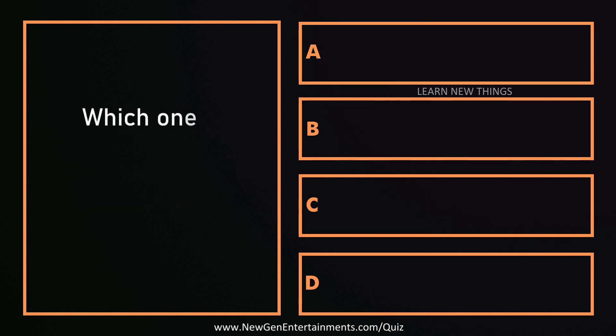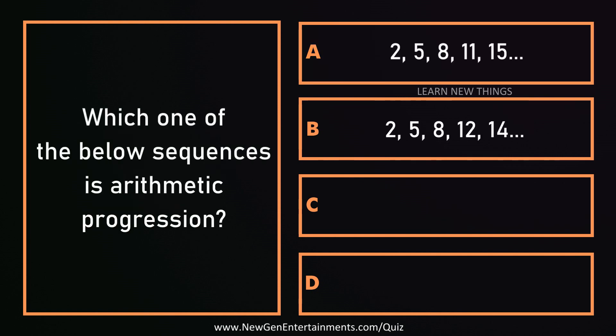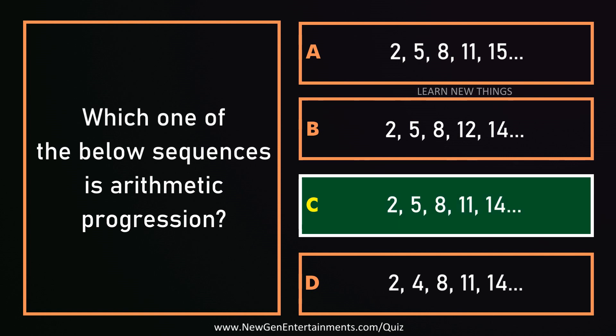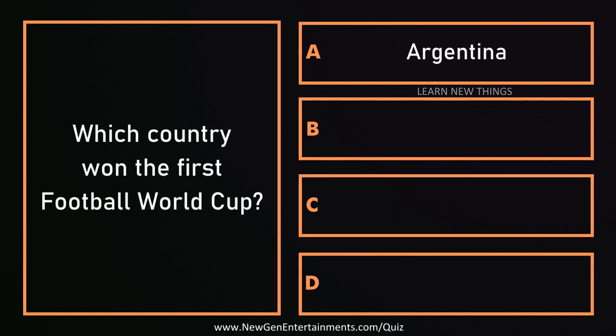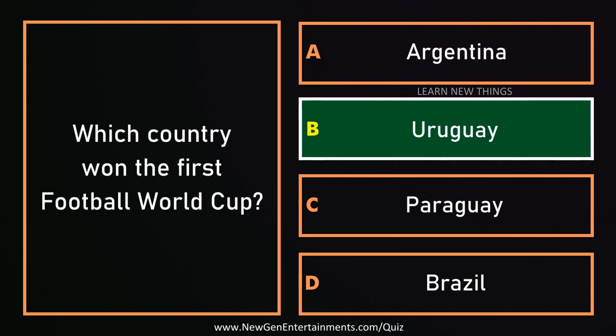Which one of the below sequences is arithmetic progression? Option C: 2, 5, 8, 11, 14. Which country won the first football world cup? Uruguay.